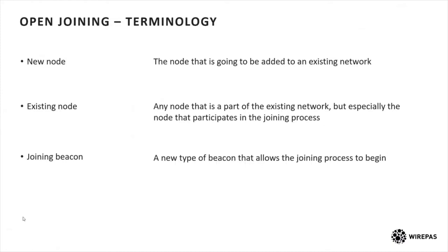Open joining is a new feature that has been introduced to the stack that allows a node to join a network even if it does not have the network parameters like the encryption keys or the network address. A bit of terminology: a new node is a node that wants to connect to a network but does not have the network parameters. An existing node is already connected to the network and will take part in the joining process. Joining beacons are a new type of beacon introduced to the WirePass stacks that allow a node to join the network.